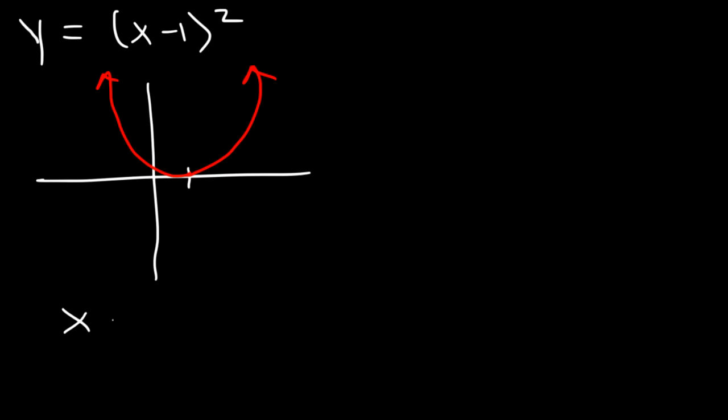Now what about this one? y equals x minus 1 squared. This graph is going to shift one unit to the right. If you're ever unsure about this, set the inside equal to 0, and you'll see that x equals 1. That's going to be the location of the new origin, or the vertex.